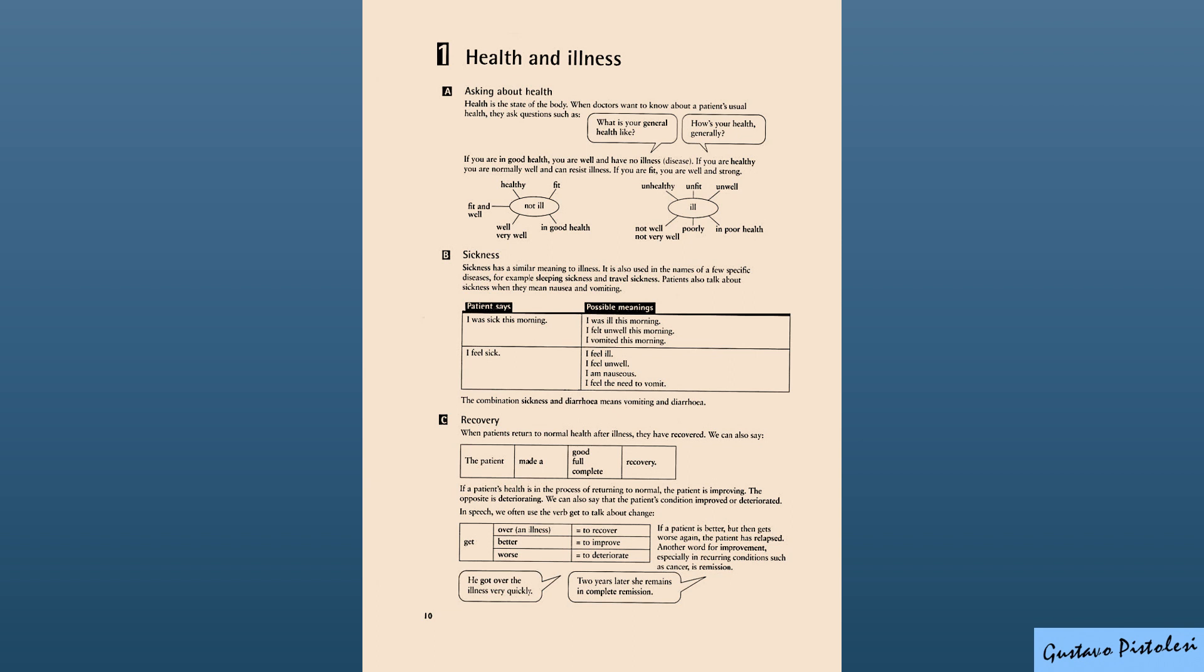If a patient is better but then gets worse again, the patient has relapsed. Another word for improvement, especially in recurring conditions such as cancer, is remission. He got over the illness very quickly. Two years later, she remains in complete remission.